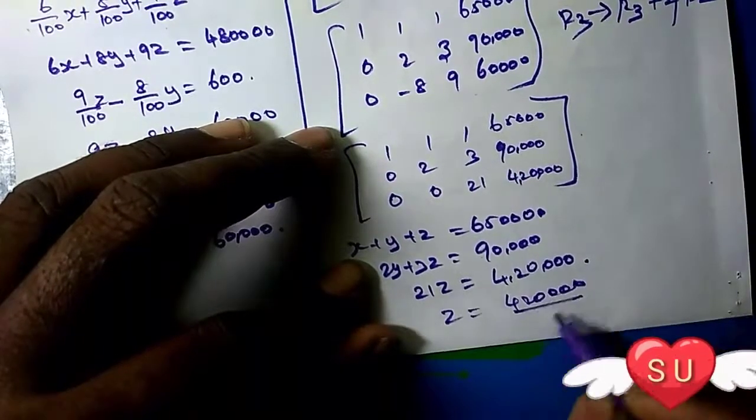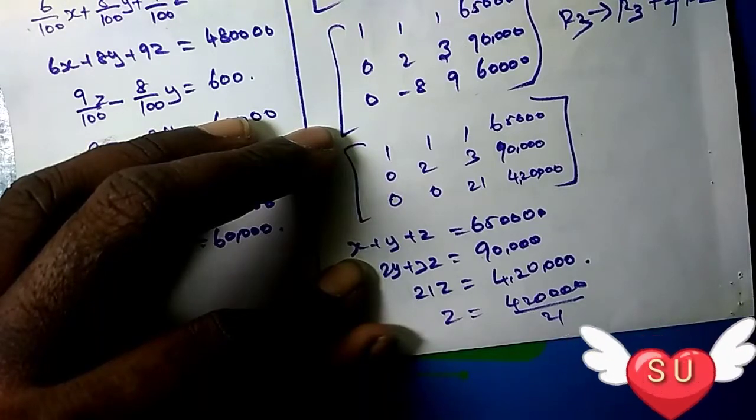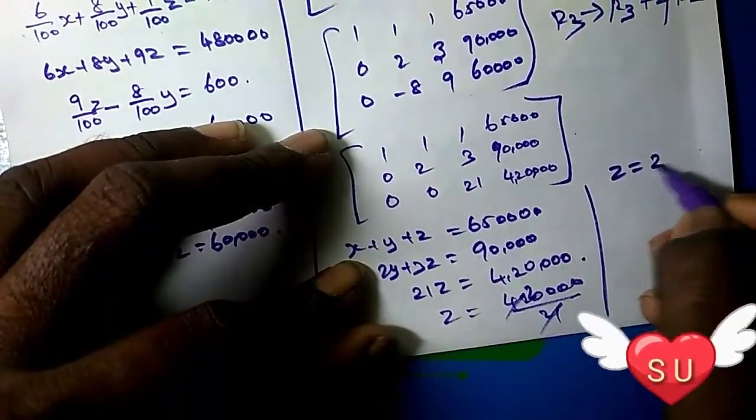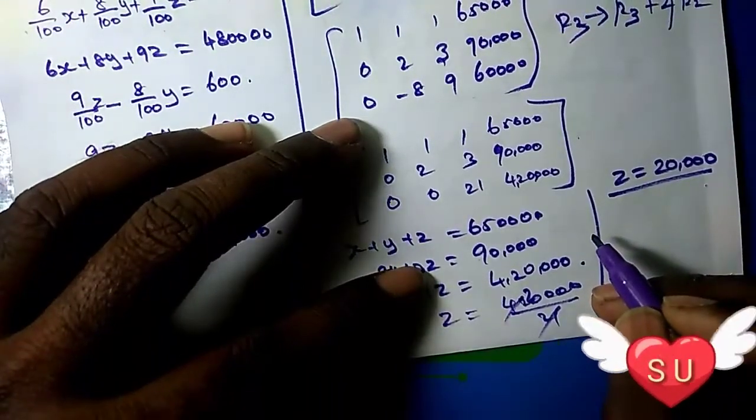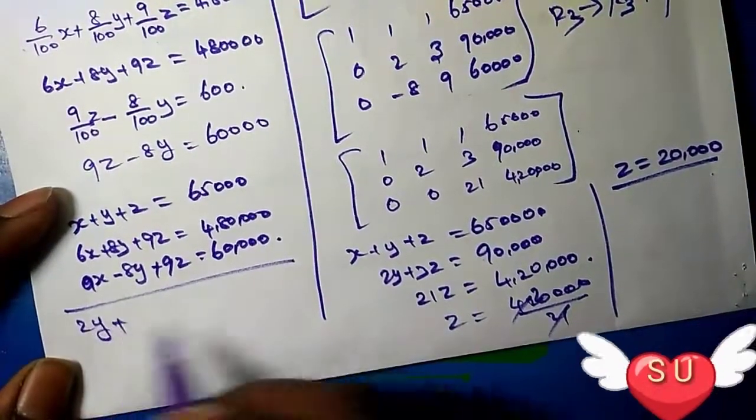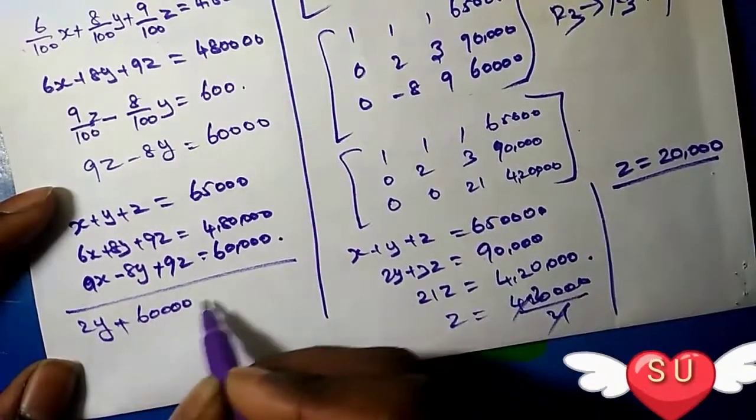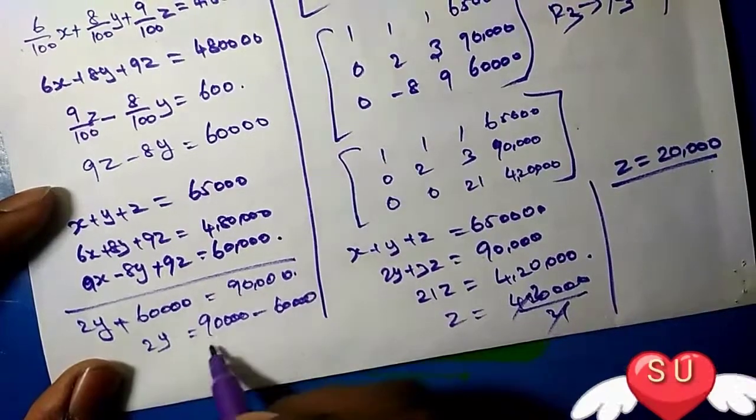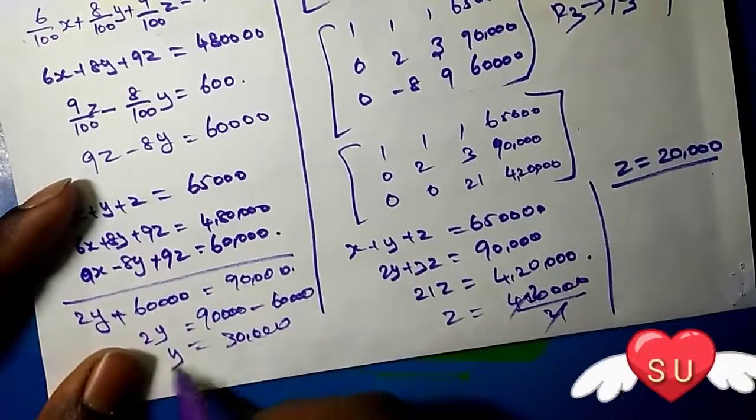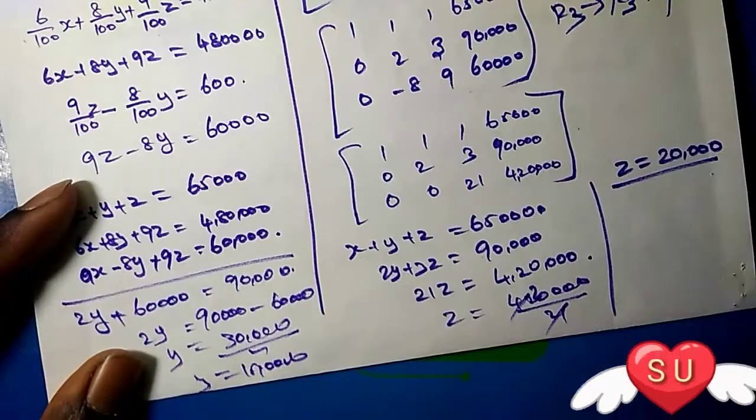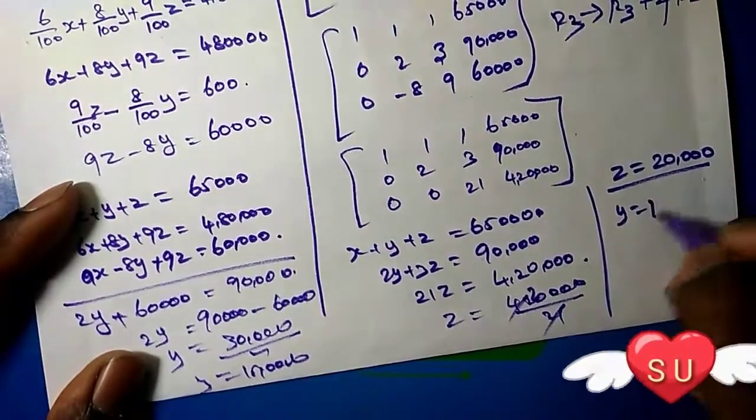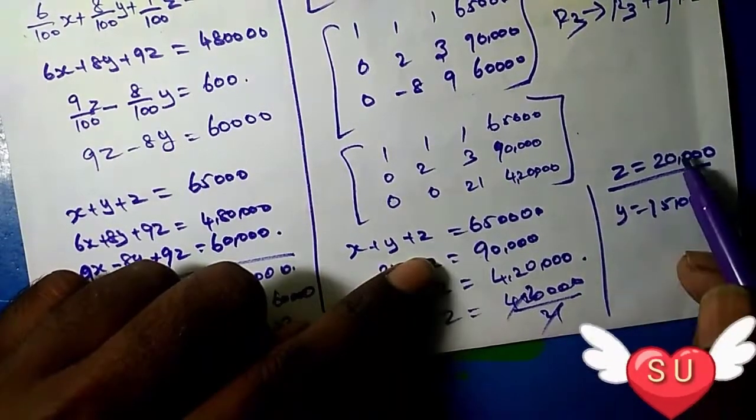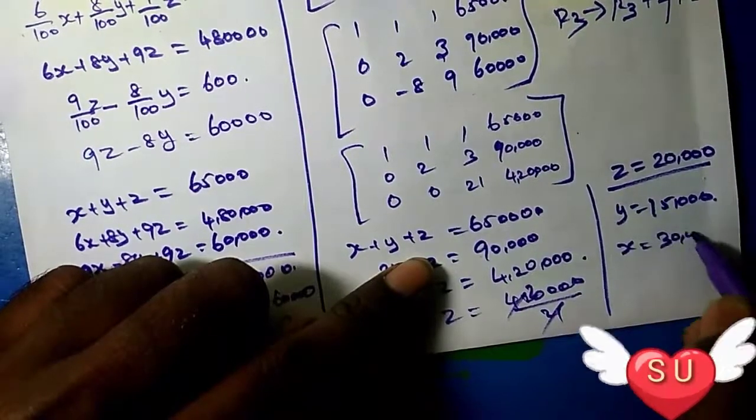Therefore, Z equals 420,000 divided by 21, which equals 20,000. Substituting: 2Y plus 60,000 equals 90,000, so 2Y equals 30,000, therefore Y equals 15,000. Finally, X plus 15,000 plus 20,000 equals 65,000, so X equals 30,000.